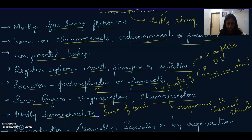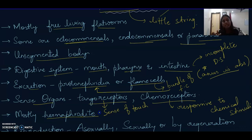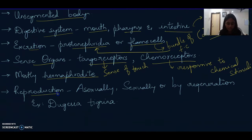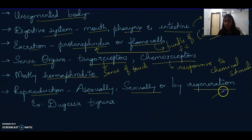Mostly these are hermaphrodite organisms. Hermaphrodite means one organism has both male and female sex organs. Reproduction can be asexual, sexual, or by regeneration. These turbellarians also have regeneration capacity.